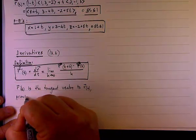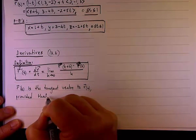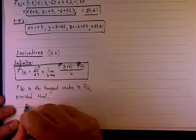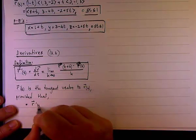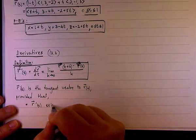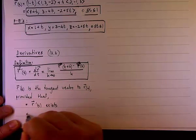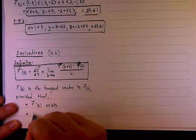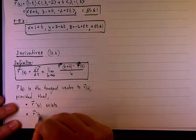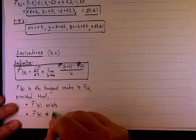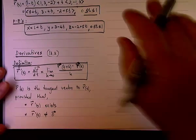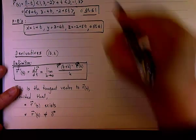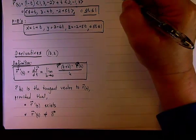But that will be provided that, first, r'(t) exists, and second, that r'(t) is not equal to the zero vector. Does it look familiar? Pretty much what we had in Calc 1.